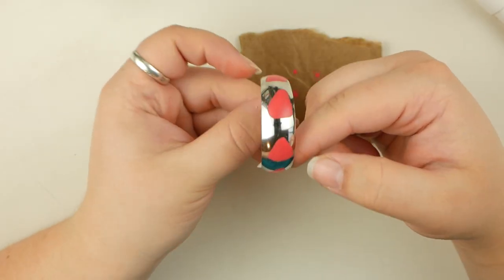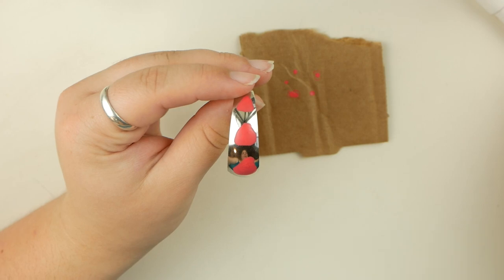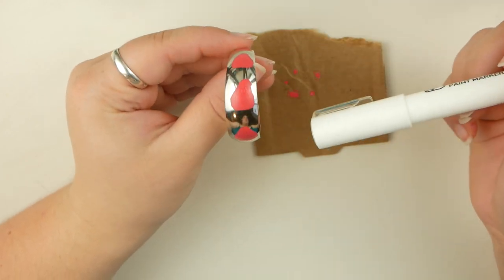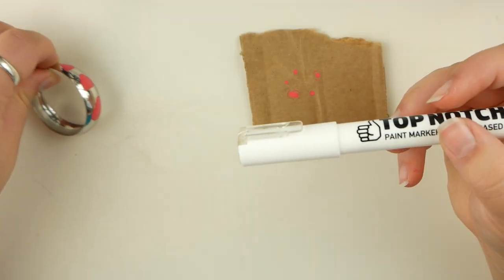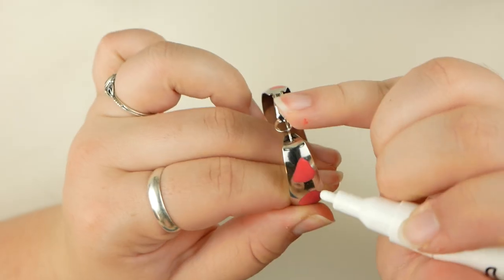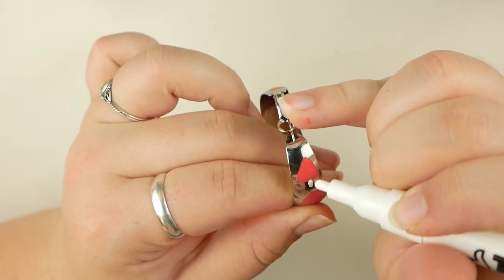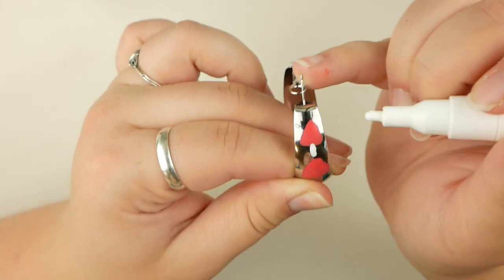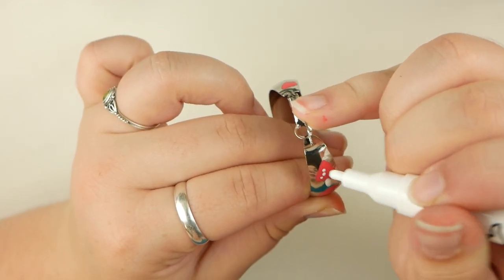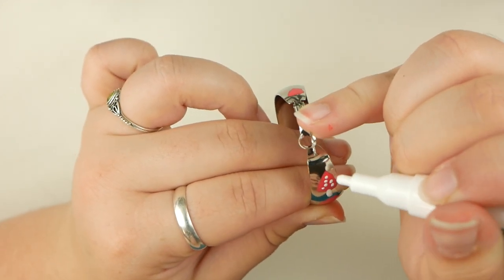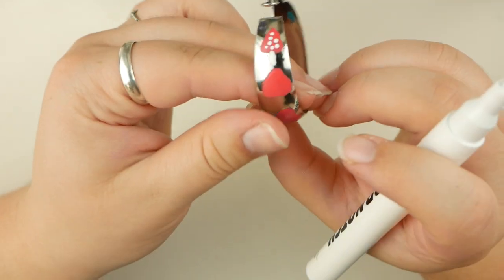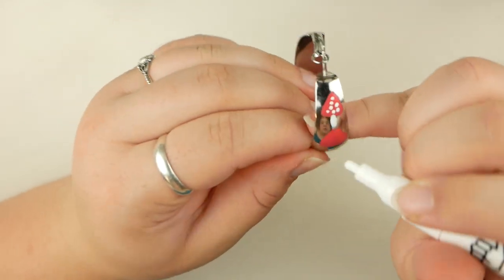Okay, so now all of our mushroom caps are dry. So we can get to the stems and dots with the white paint pen. So you just draw a little line under your mushroom and do some little spots. And then you move on to the next one.